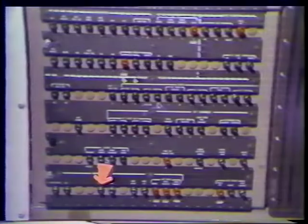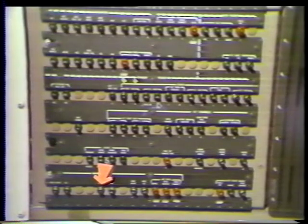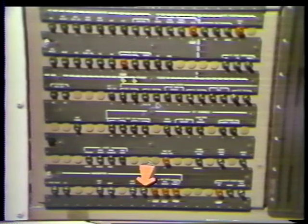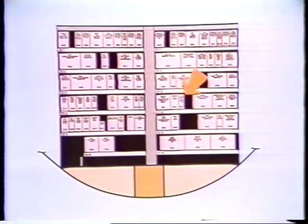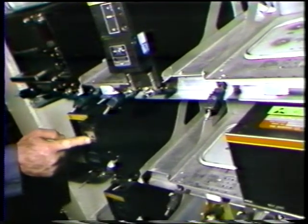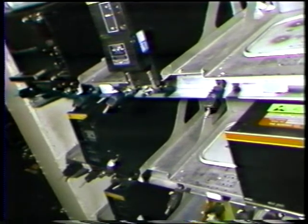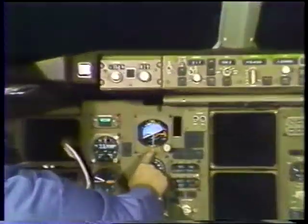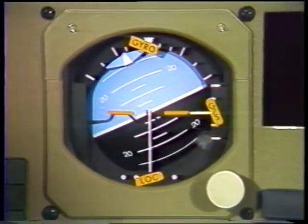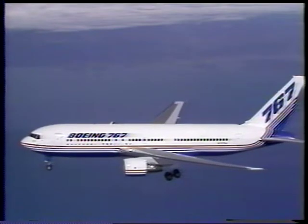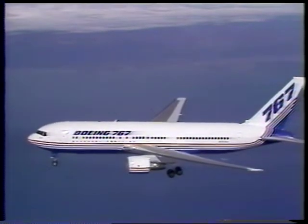The final system to be presented is the standby attitude reference system. Power is provided from the P11 panel through the standby attitude reference circuit breaker and the standby ILS circuit breaker. The static converter ILS processor is located in the main equipment center on rack E1-4. The standby attitude indicator is located on the captain's instrument panel P1. This completes the component locator module for the radio navigation systems.